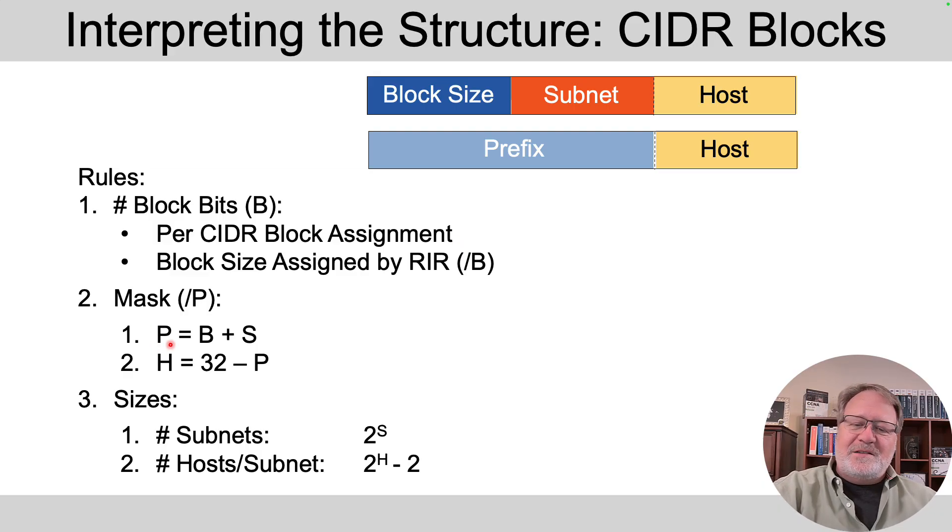So the prefix bits that you choose to use in your subnet mask is going to be that assigned block size prefix length plus your number of subnet bits. So you'll have some subnet bits to count subnets with.